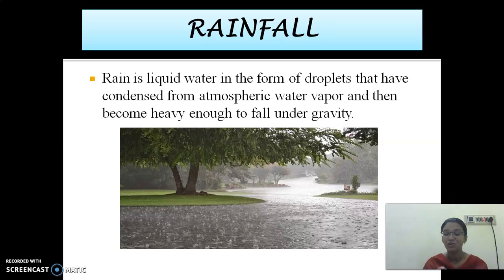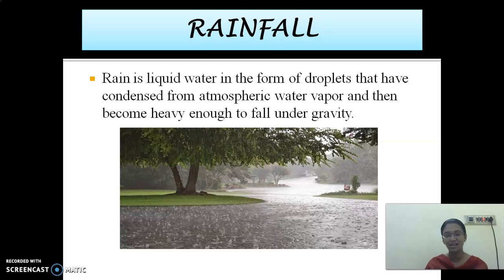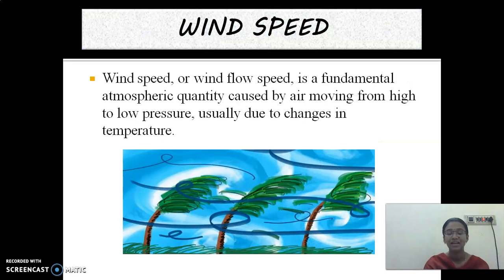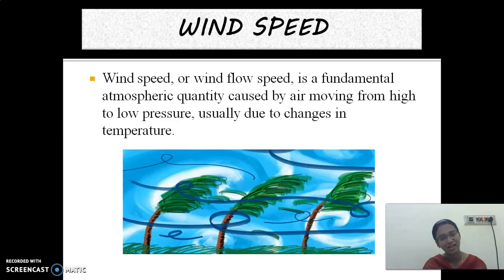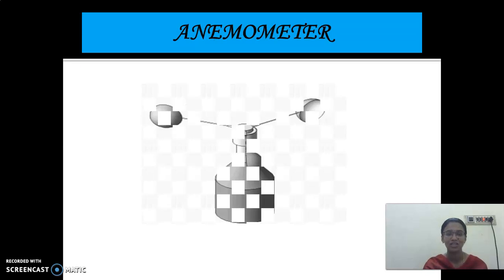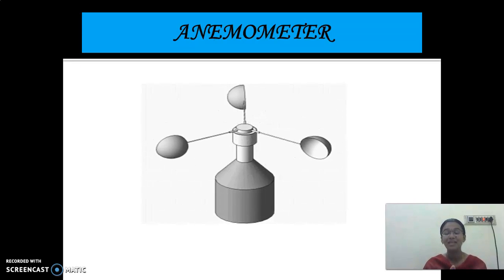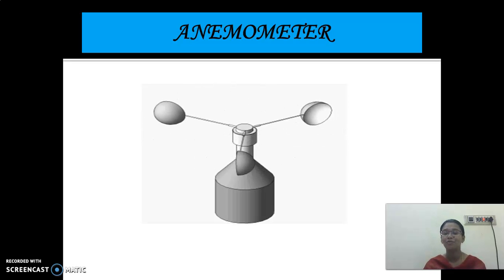The third element is rainfall. When water vapor reaches the atmosphere, it condenses to form thick droplets and reaches the earth as rain. Next is wind speed. The movement of air is called wind. It always moves from a high pressure area towards a low pressure area. The wind speed is measured by an instrument called an anemometer.